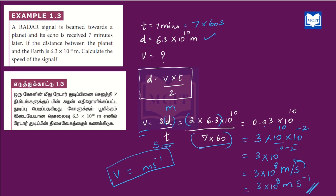Students, this is the answer — a very easy problem. In the exam you can answer it using this information. The formula v equals 2d divided by t can also be rearranged as t equals 2d divided by v. Don't worry and don't get confused — this formula is easy to use. All the very best students, study well and happy learning.